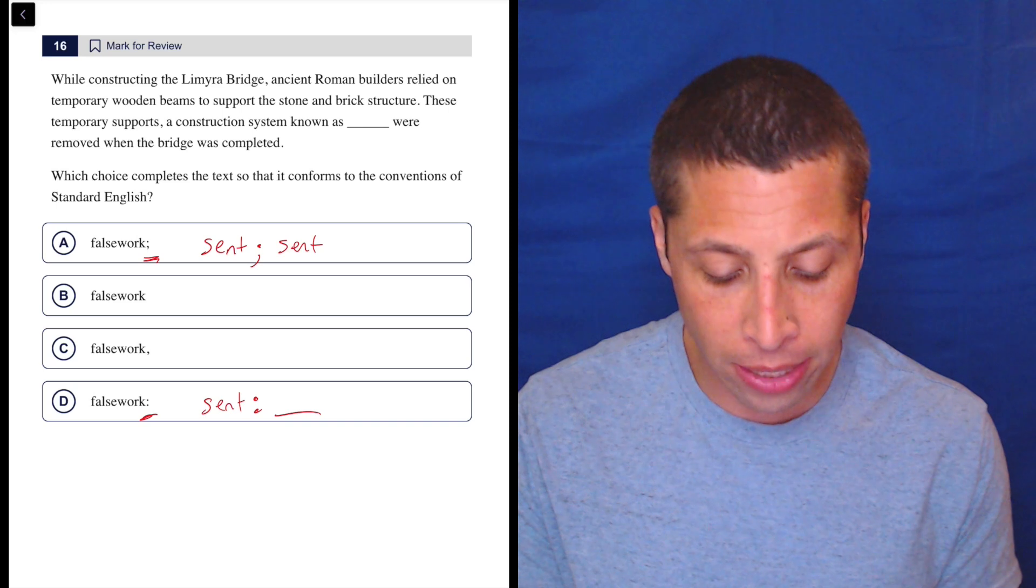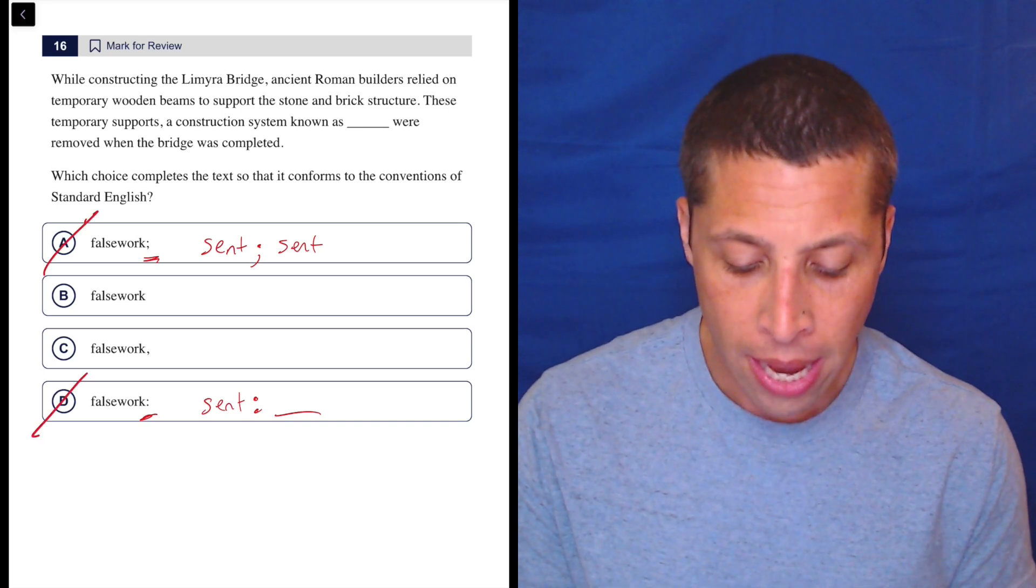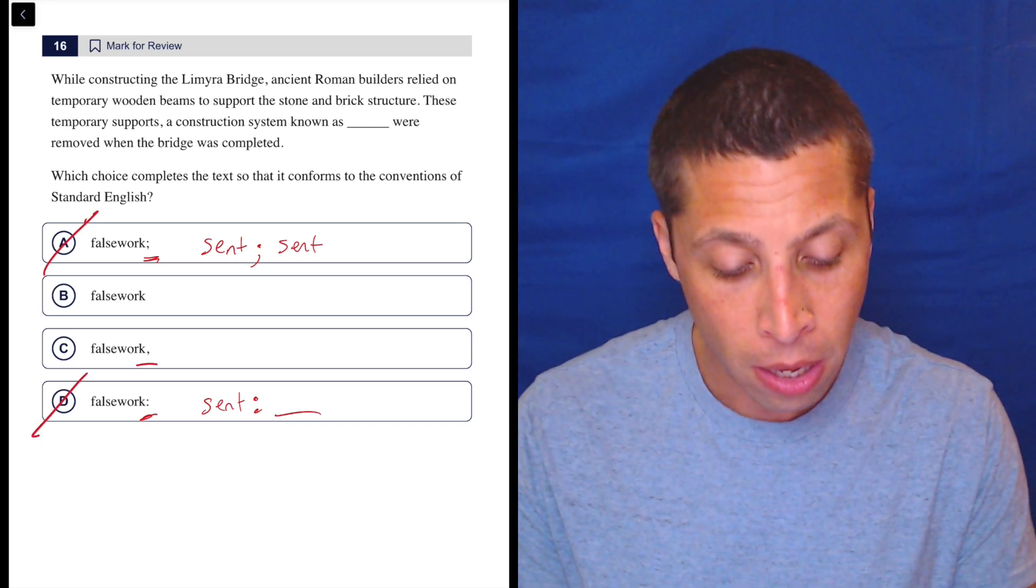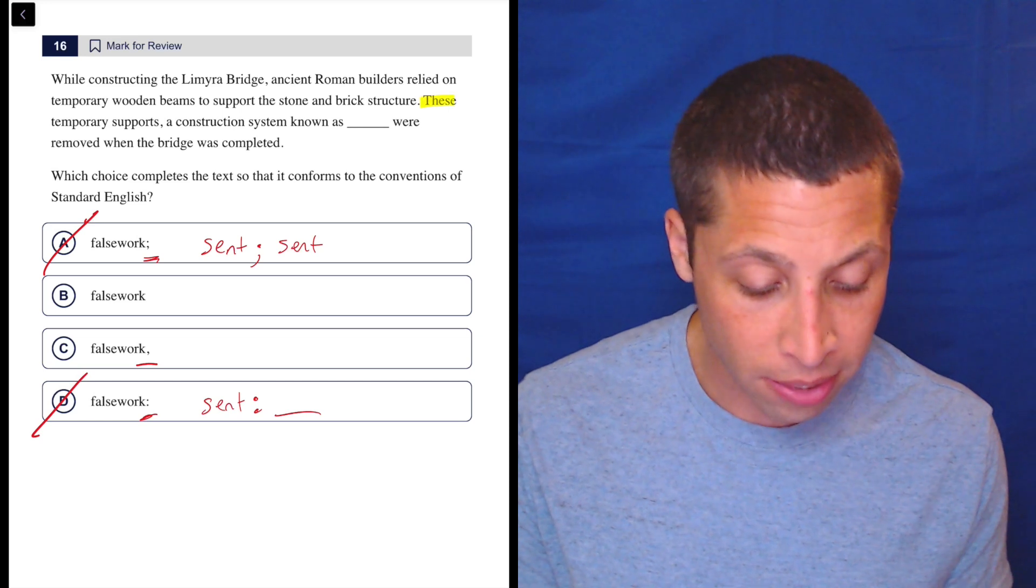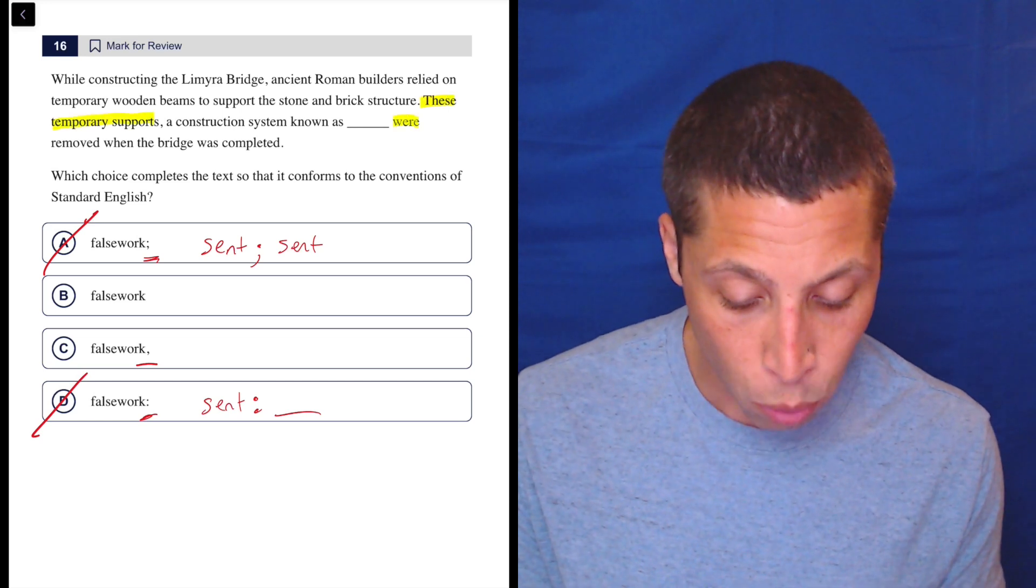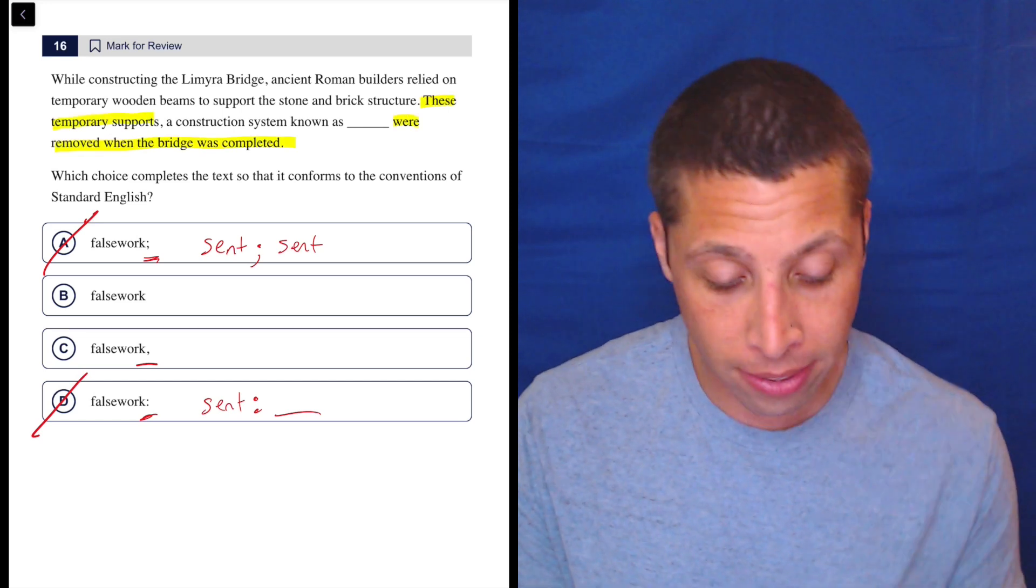So it's not a complete sentence beforehand, so that gets rid of A, that gets rid of D. Now we just need to decide what's the point of the comma. Well, I can see it. The real sentence is this. These temporary supports were removed when the bridge was completed. That's the sentence.